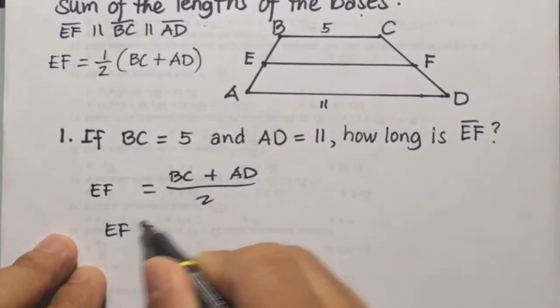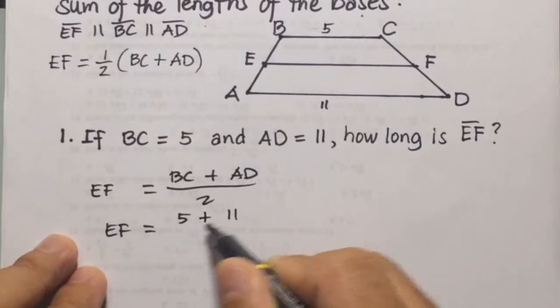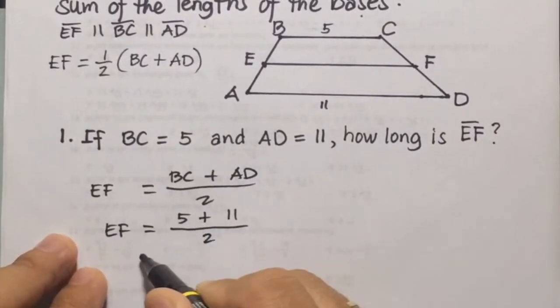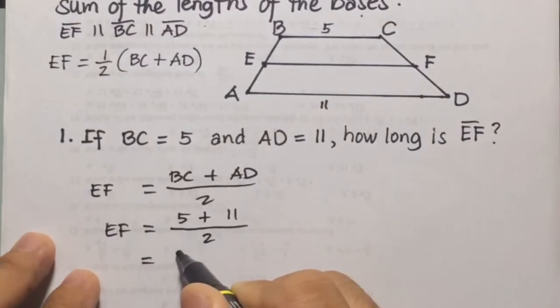So EF here will be equal to BC is 5, then AD is 11, so 5 plus 11 divided by 2, so 5 plus 11 is 16, divided by 2, that will be 8.